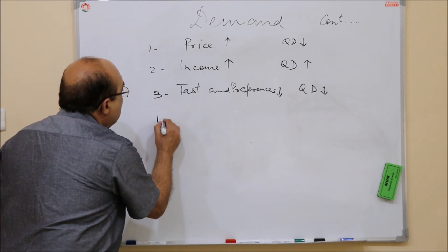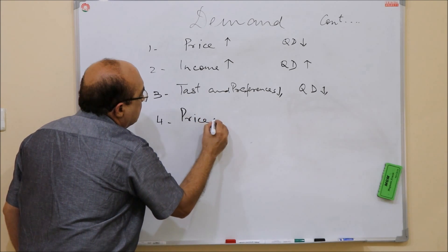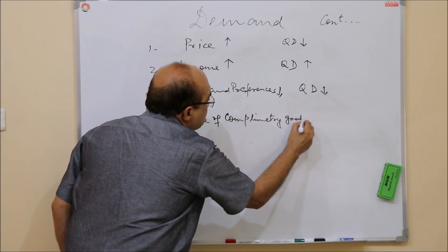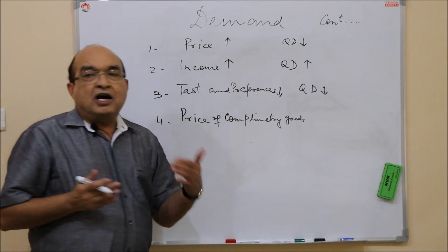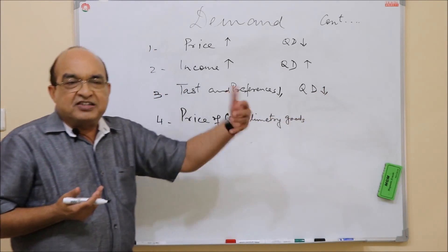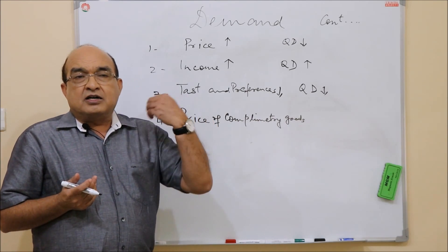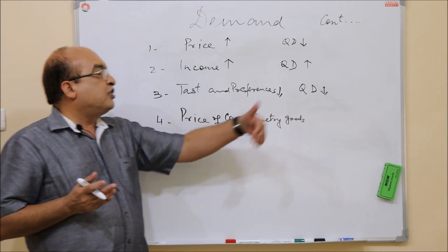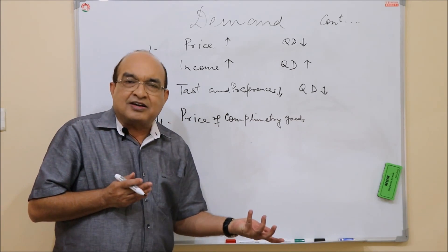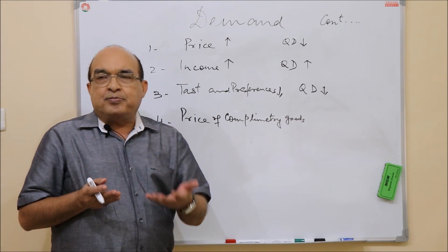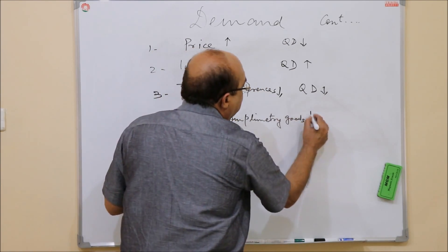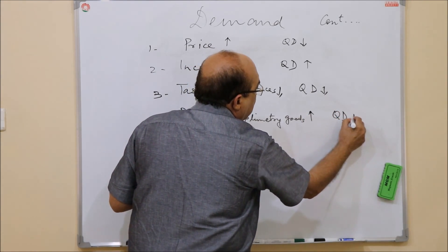Price of complementary goods. Complementary goods are those that are used in combination. For a commodity which is being discussed here, if there is a commodity which becomes necessary when you are using a particular commodity - say, for example, car and petrol - petrol is necessary if you have to drive a car. So if the price of petrol goes up, it is bound to affect the demand for cars. So price of complementary goods are such that if they go up, quantity demanded of good X will go down.